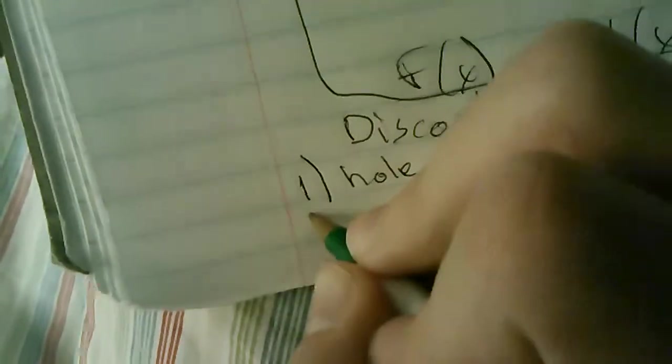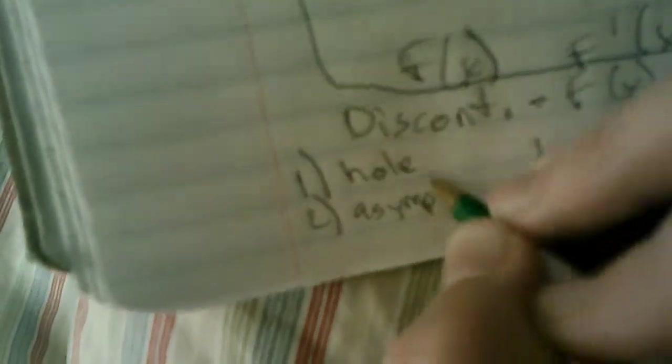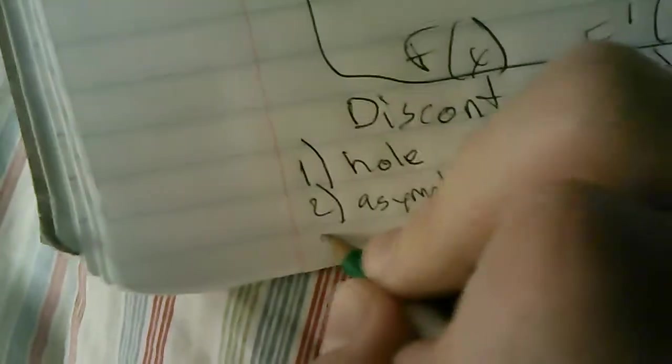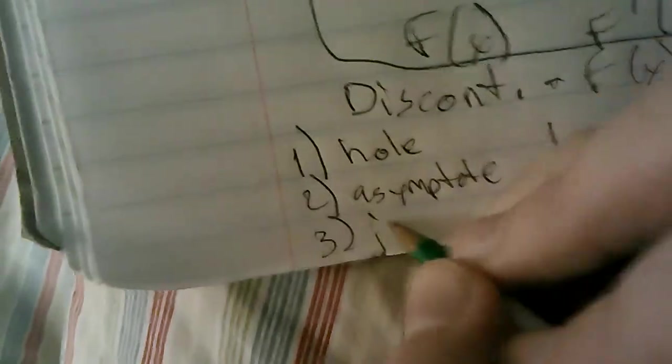Number one is a hole, or a point discontinuity. Number two is an asymptote. And number three is a jump. And jumps will only occur on piecewise functions or the step function where you round down and then you round up, but don't worry about that.